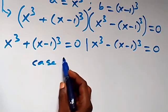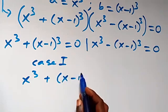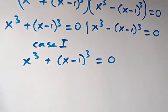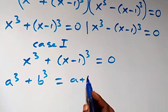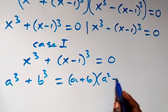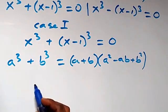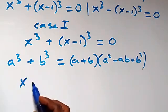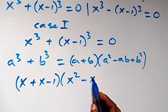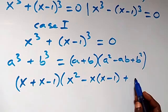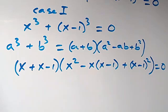For Case one, x cubed plus bracket x minus one cubed equals zero. This follows from the sum of two cubes: a cubed plus b cubed equals a plus b times bracket a squared minus ab plus b squared. So this can be written as x plus bracket x minus one, times bracket x squared minus x times bracket x minus one, plus bracket x minus one squared, equals zero.